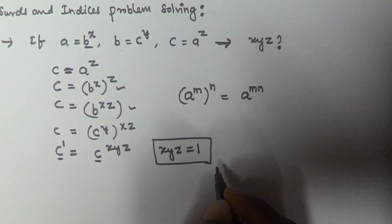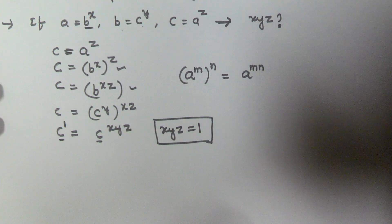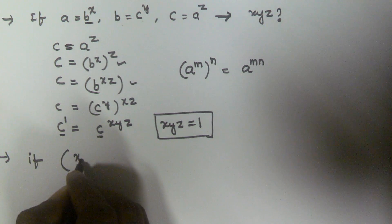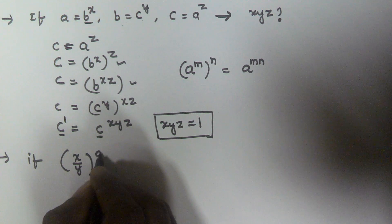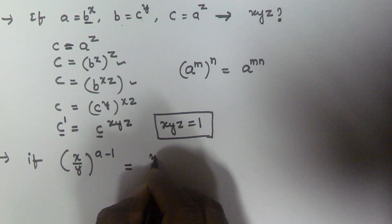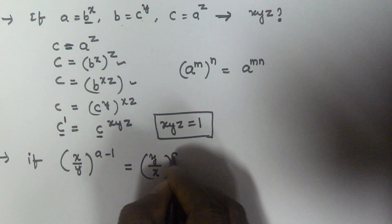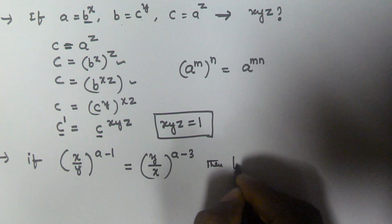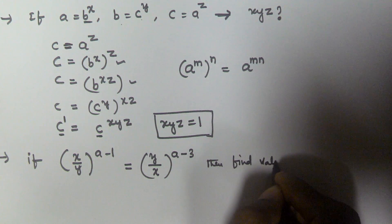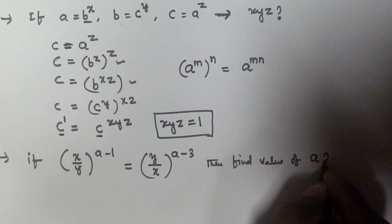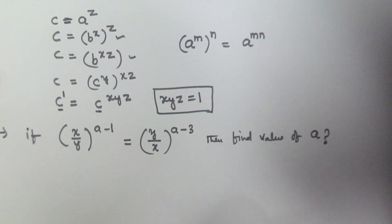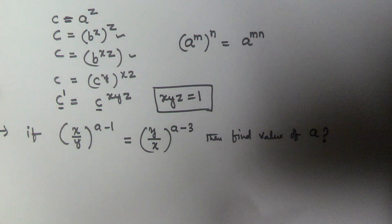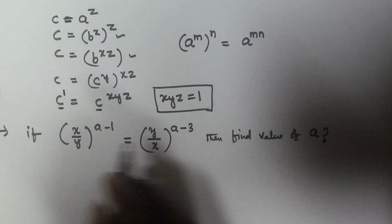I hope you got that. Now let us take another example based on indices. If (x/y) to the power of (a minus 1) is equal to (y/x) to the power of (a minus 3), then find the value of a.